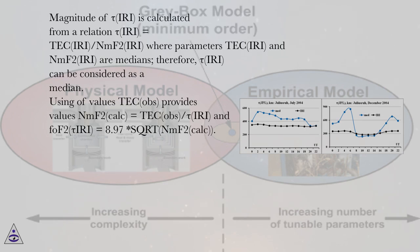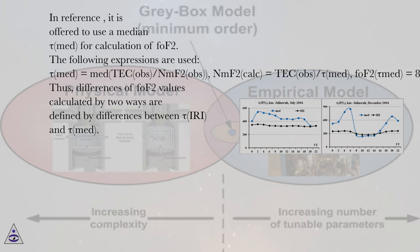Magnitude of tau IRI is calculated from a relation tau IRI equals TEC IRI slash NMF2 IRI where parameters TEC IRI and NMF2 IRI are medians, therefore tau IRI can be considered as a median. Using values TEC OBS provides values NMF2 calc equals TEC OBS tau IRI and FOF2 tau IRI equals 8.97 SQRT NMF2 calc.